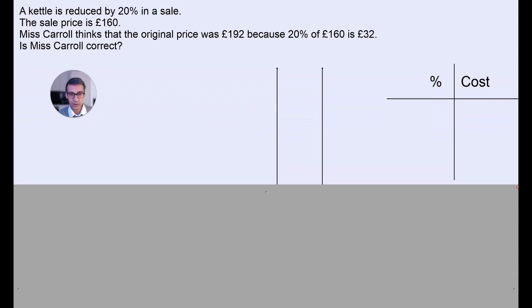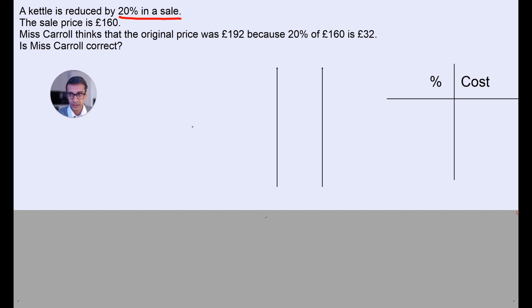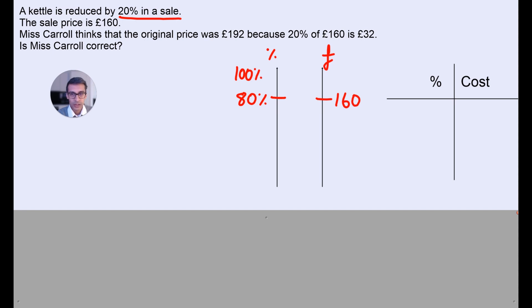Let's use the representation of the double number line to check this. When you have a 20% discount on something, that's telling you that you are paying 80%. So 80% is equivalent to £160, because that's the sale price. We're going to add percent here and pound or cost at the top. That's the sale price and we want to work out the original price.